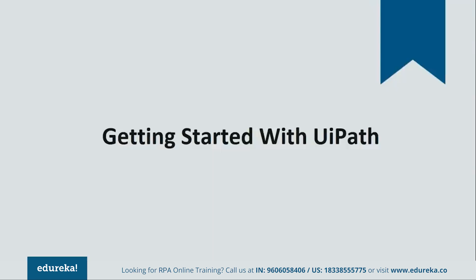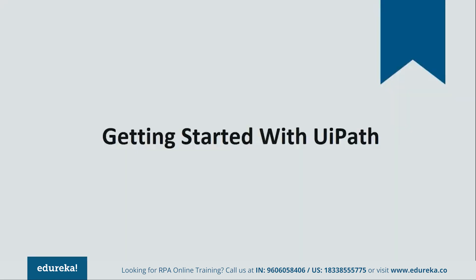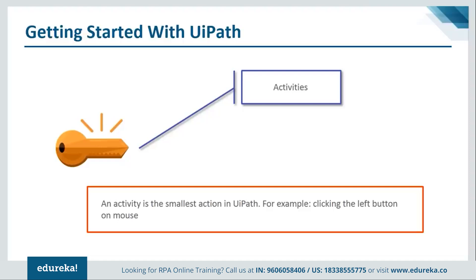Once the tool is installed and you open UiPath Studio, you'll be prompted to choose a project. Before that, there are two key concepts to understand. First, an activity is any small task performed during automation — such as clicking the left mouse button, pressing a keyboard key, clicking the close button, or copying and pasting text from the clipboard.